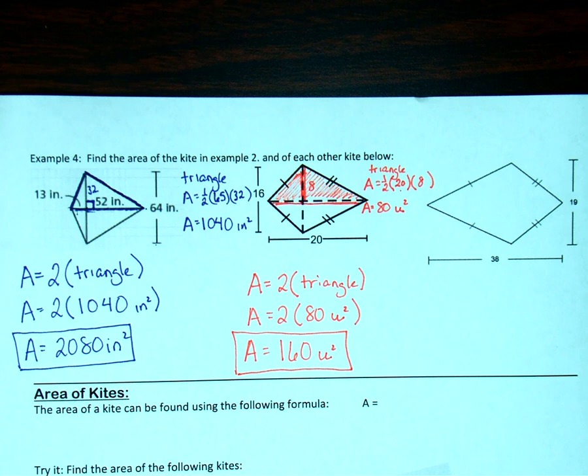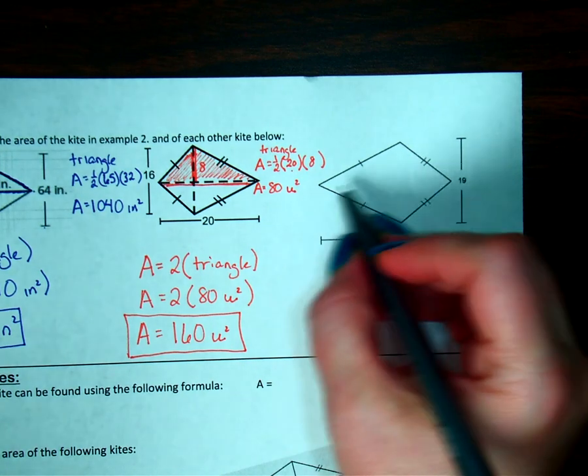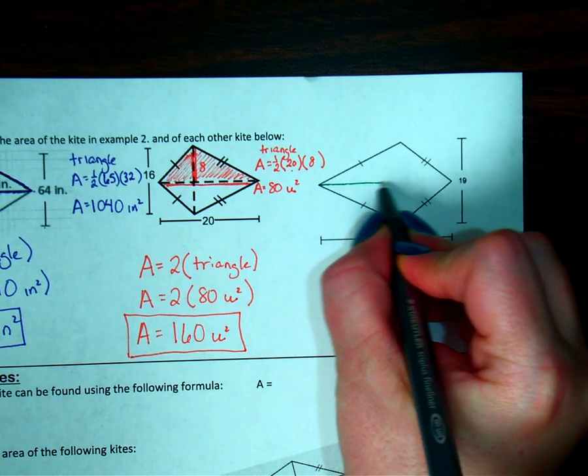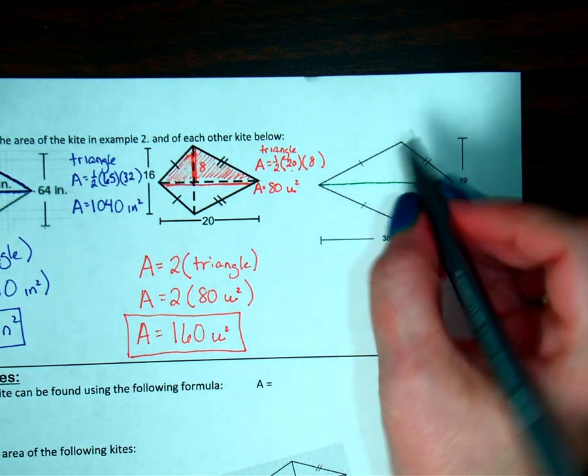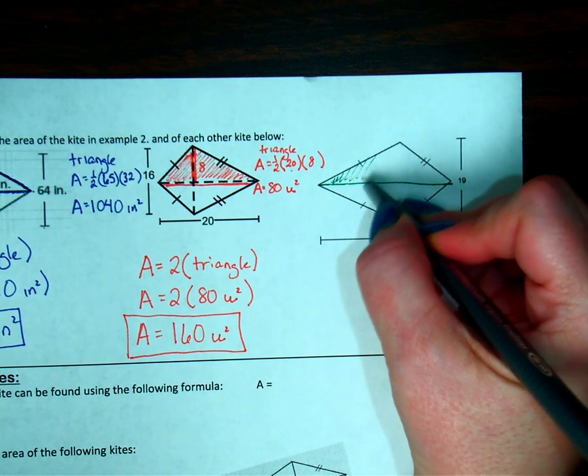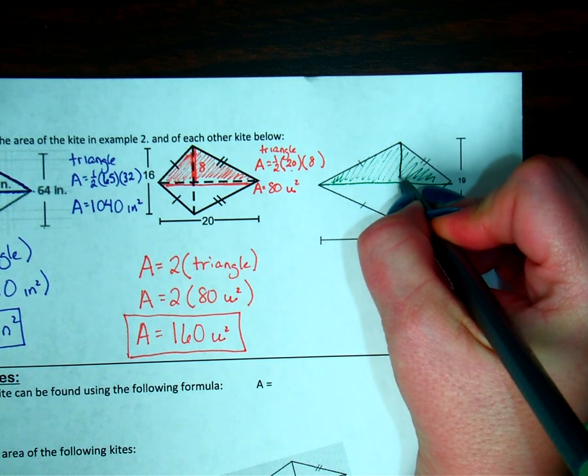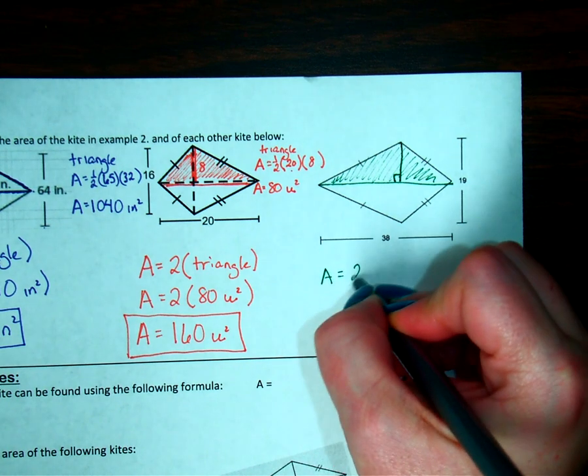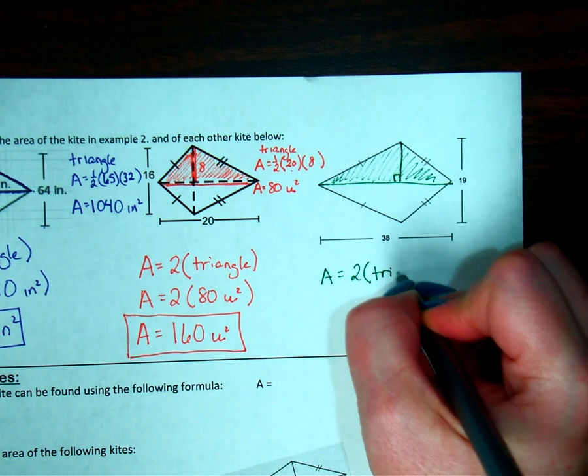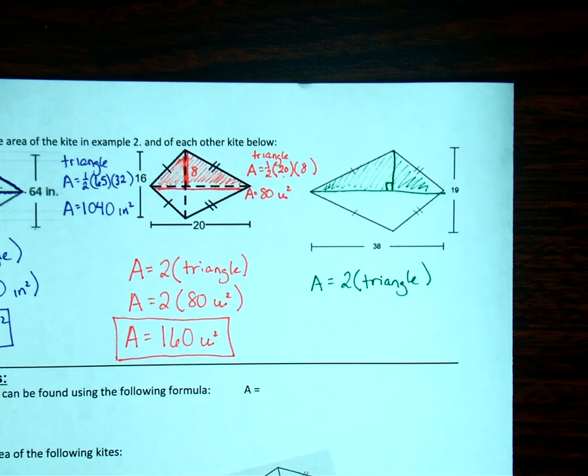Alright, when I look at the next one, here we go, I am going to have to draw in that triangle, right? Because I don't see it there, right? I need to draw in the top triangle so I can see it there. And I'm also going to draw in its height because I know the area is going to be 2 triangles. So I need to figure out how big 1 of those triangles is.